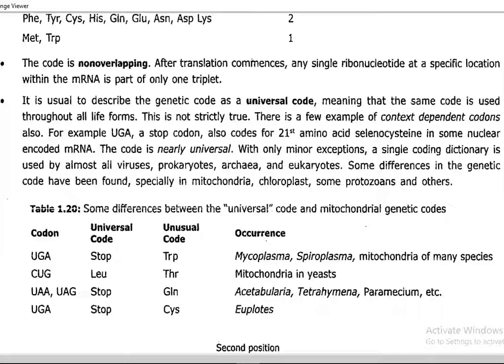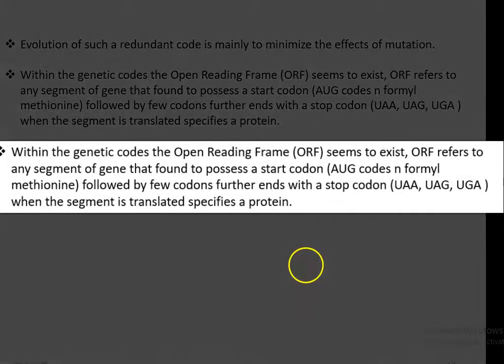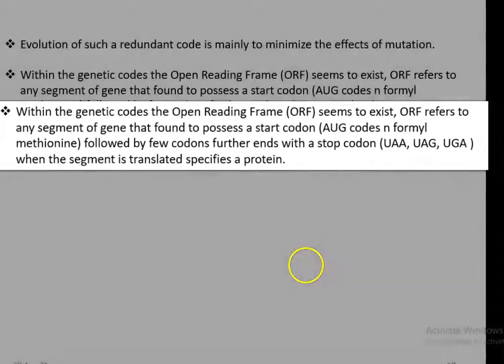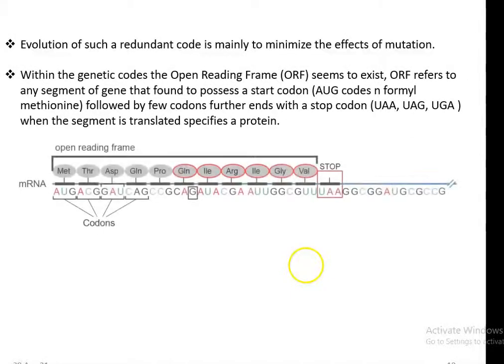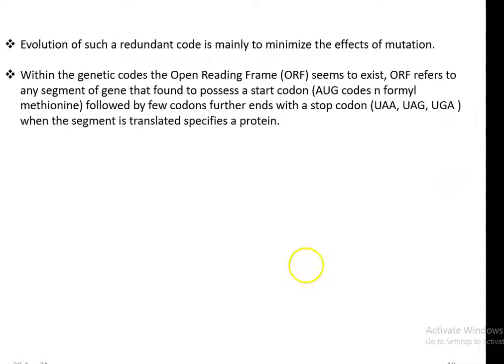The last salient feature of the genetic code is that genetic codes are commonly present as an open reading frame (ORF), which refers to any segment of a gene that possesses a start codon — AUG, which codes for N-formyl methionine, the first amino acid added during translation — followed by further codons, and finally ending with a stop codon: UAA, UAG, or UGA. When such an arrangement is present, that particular segment is translated specifically into a protein molecule.